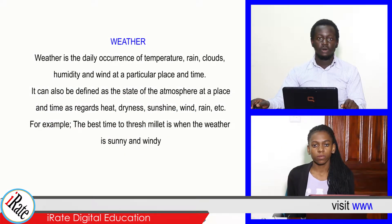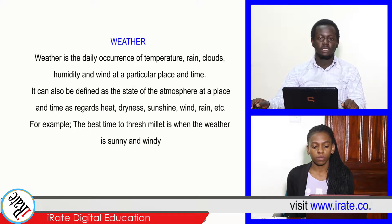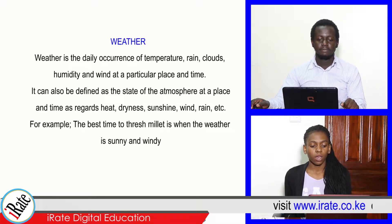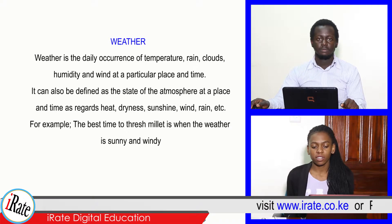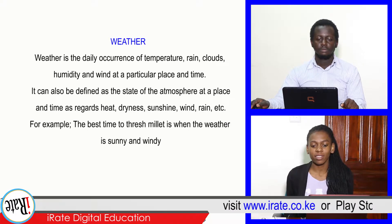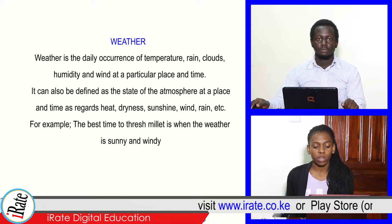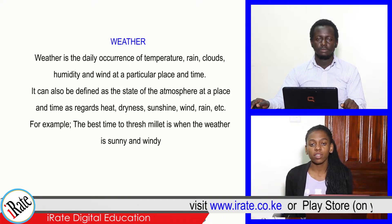Weather is the daily occurrence of temperature, rain, clouds, humidity and wind at a particular place and time. It can also be defined as the state of the atmosphere at a place and time as regards heat, dryness, sunshine, wind, rain, etc.